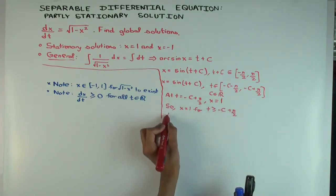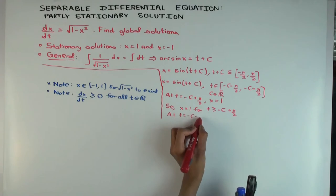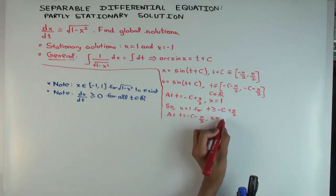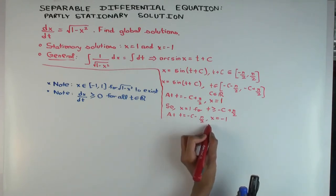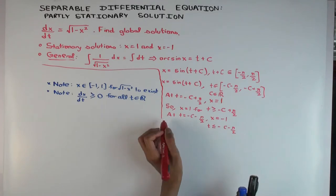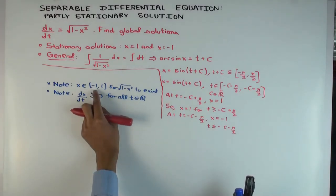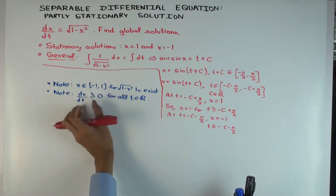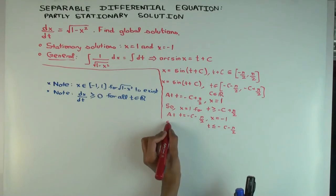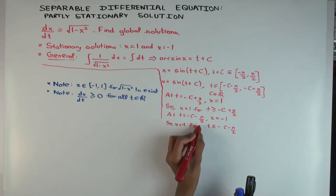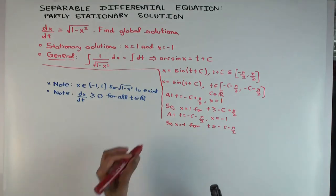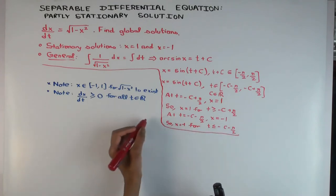Okay, and at t = -c - π/2, what is x? What is x? x = -1. So what can it be for all earlier times? For earlier times? Yeah, well, it has to remain between -1 and 1. Oh, it's constant. It has to remain -1, right? It cannot go, it couldn't have been smaller because it has to be in here, but it couldn't have been larger because it's a non-decreasing function, right? So x = -1 for t ≤ -c - π/2. Okay, so now we can write the piecewise solution.